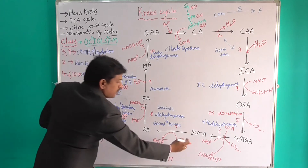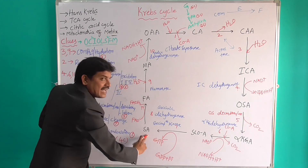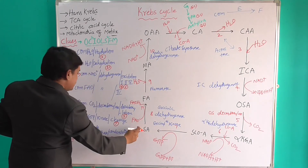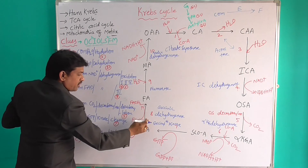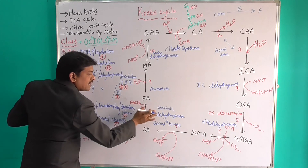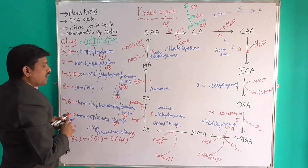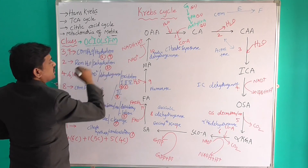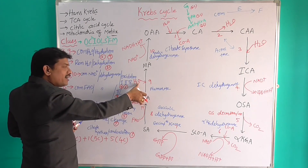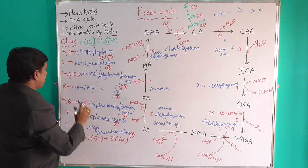Stage 7 name is Cleavage. Succinyl-CoA is combined with GDP and Pi to form Succinic acid and GTP, in the presence of Succinyl Thiokinase. Stage 8 is Oxidation Number 3: Succinic acid is combined with FAD to form Fumaric acid and FADH₂, in the presence of Succinic Dehydrogenase. Stage 9 is Hydration: Fumaric acid is combined with water to form Malic acid, in the presence of Fumarase enzyme.